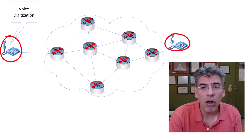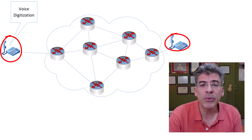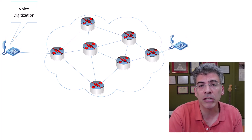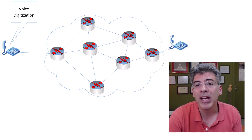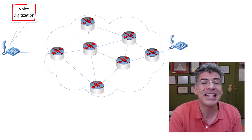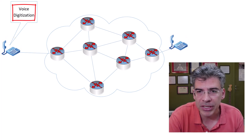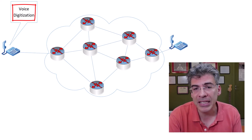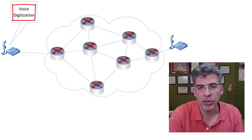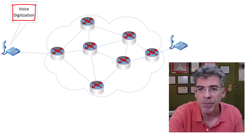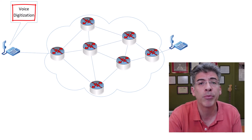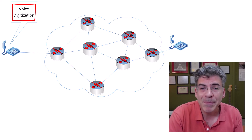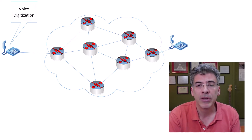Now, during this call, initially we have what is called voice analog to digital conversion, or the digitization of the voice. When you speak into a VoIP-enabled device, like a voice over IP phone, a computer, or a smartphone with the appropriate software, your voice is picked up as an analog signal.